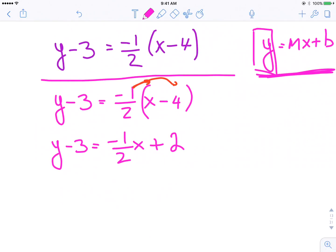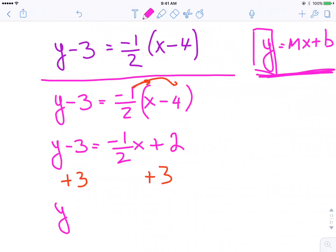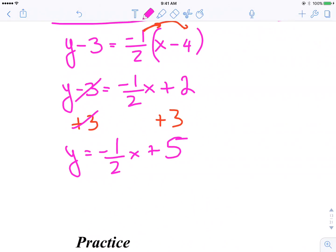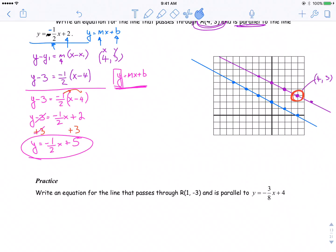Then I need to get rid of this 3 on the left hand side, so I'm going to add 3, I do the opposite. Because I add 3 there, I'm going to add 3 to the other side of the equal sign. That's going to give me y is equal to, because those will cancel, negative 1 over 2x, 2 plus 3, 5. So there's an equation of the line in slope intercept form that represents our purple graph over here, the line parallel to the first equation, but passing through the point (4, 3).